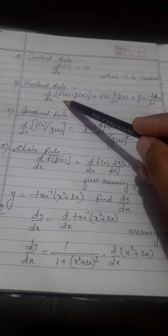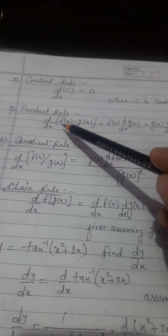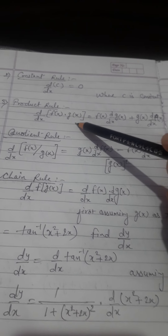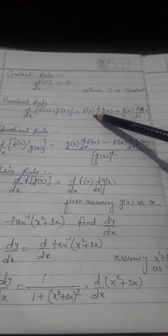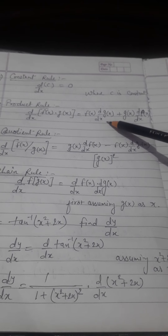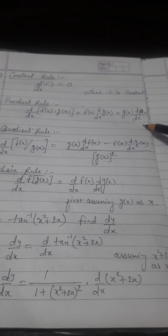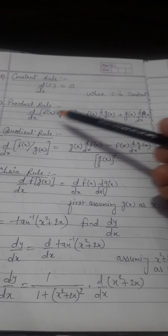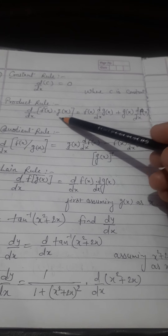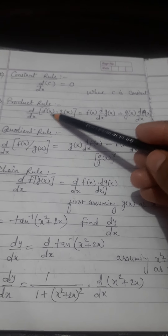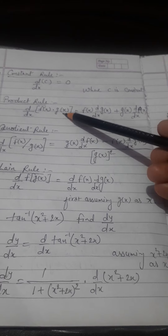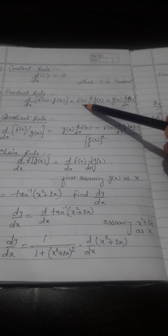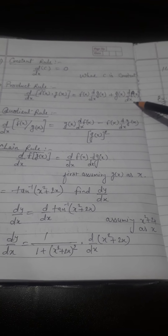The third rule is the product rule. This product rule is basically: differential of two functions in product, f(x)·g(x), is the first function times differential of the second function, plus the second function times differential of the first function. Here we can assume any of the functions as first or second — there is no rule to justify which one is first and which is second. As per the order you can take any one: f(x) as first and g(x) as second.